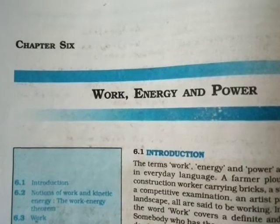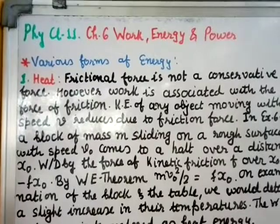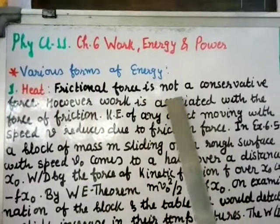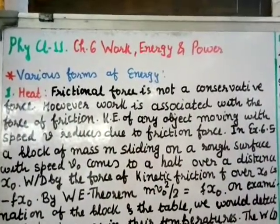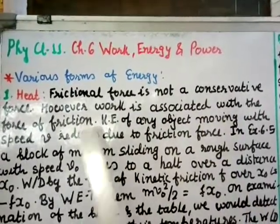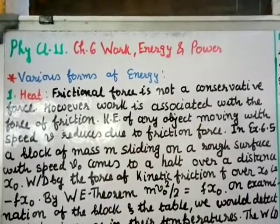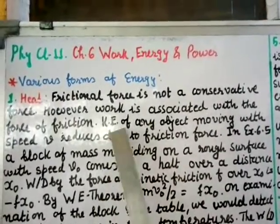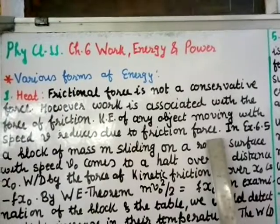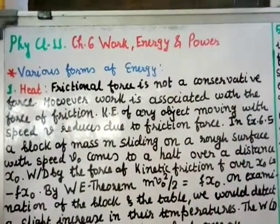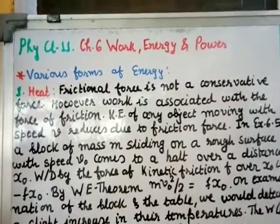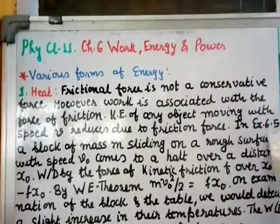Physics Class 11, Chapter 6: Work, Energy and Power. Various forms of energy. Number one: Heat Energy. Frictional force is not a conservative force. Work is associated with the force of friction, and the kinetic energy of any object moving with speed V reduces due to frictional force. When an object is moving with speed V, its kinetic energy will decrease because of friction.